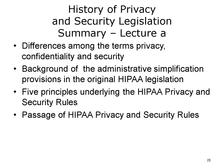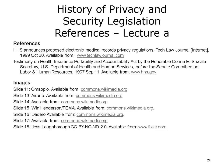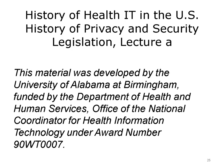This concludes Lecture A of History of Privacy and Security Legislation. In summary, we have discussed the differences among the terms privacy, confidentiality, and security, and the background of the HIPAA legislation. This background includes administrative simplification provisions, the principles underlying the privacy and security rules, and the circumstances leading to the passage of these rules.